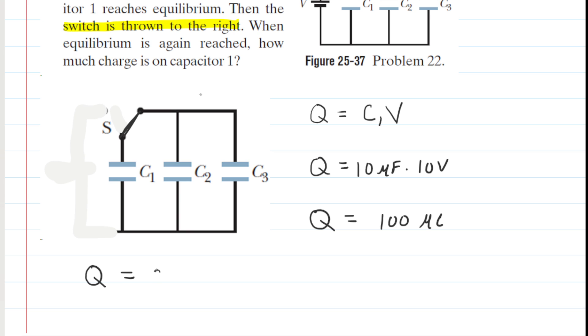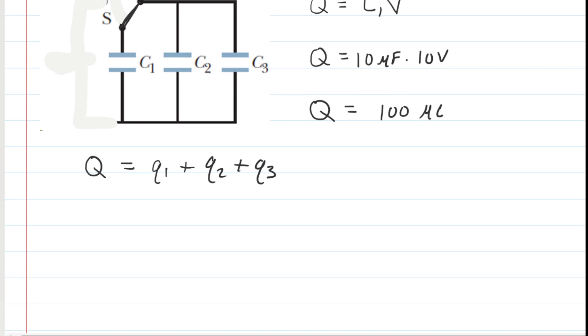which is 100 microcoulombs, is going to equal the charge on capacitor 1 plus the charge on capacitor 2 plus the charge on capacitor 3. And since the total amount of charge was 100 microcoulombs, we might as well plug that in right now. So 100 microcoulombs goes there.